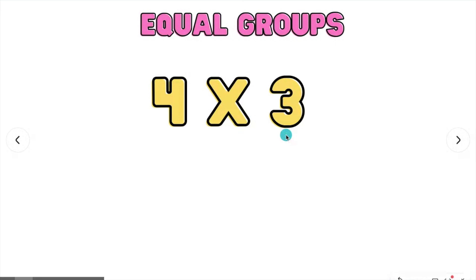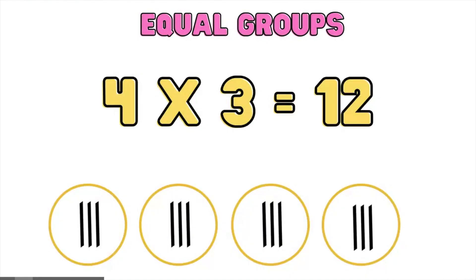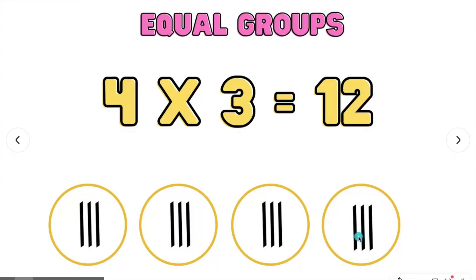4 times 3. How many circles should you make? You should make 4 circles, with 3 tallies in each circle, which gives us the answer 12.